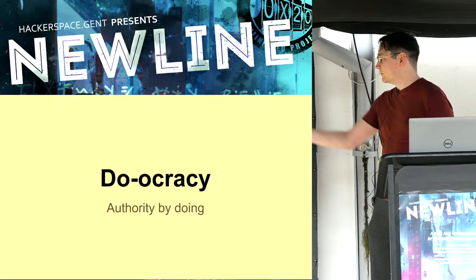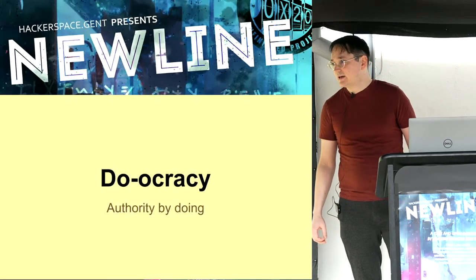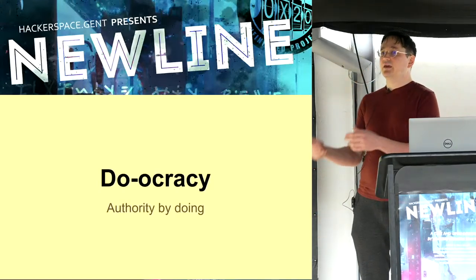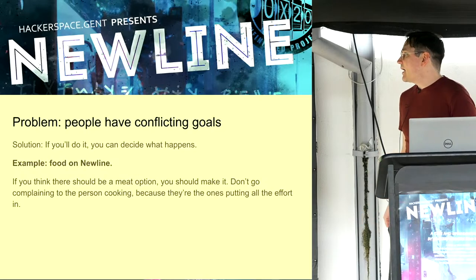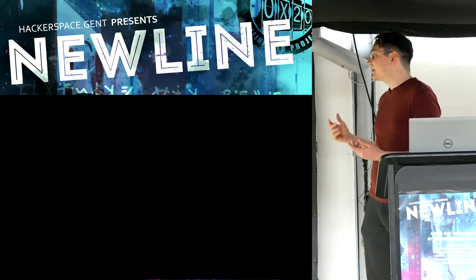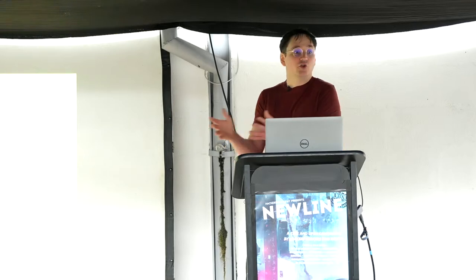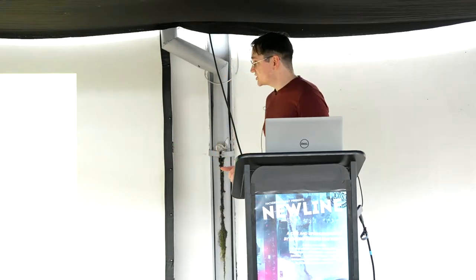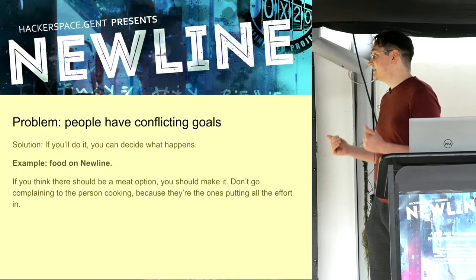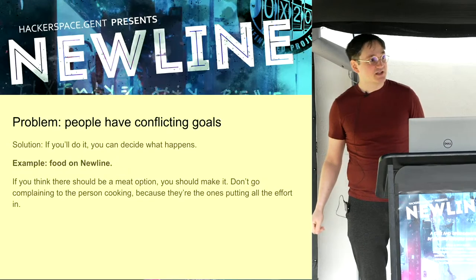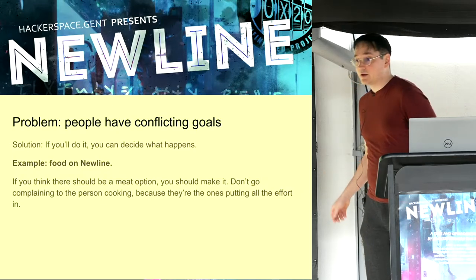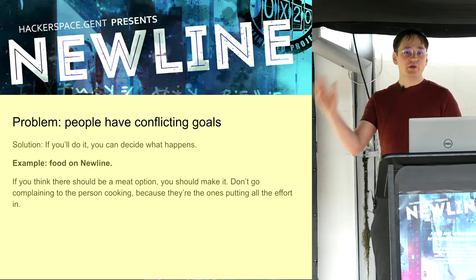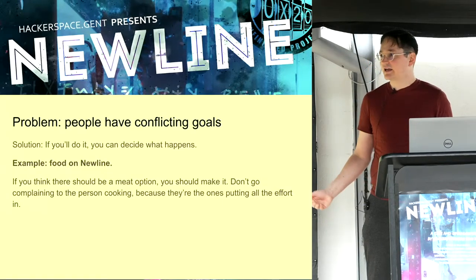The only hard power the board has is to tell someone: 'There is interpersonal conflict between you and another member — you have to leave the hackerspace for a certain period while we resolve this.' In a democracy you get authority by receiving votes; in a doocracy you get authority simply by doing something. This solves the problem of conflicting goals, because if you're the one doing something you can 100% decide how it happens. An example is food at Newline: each year there were discussions about meat options.